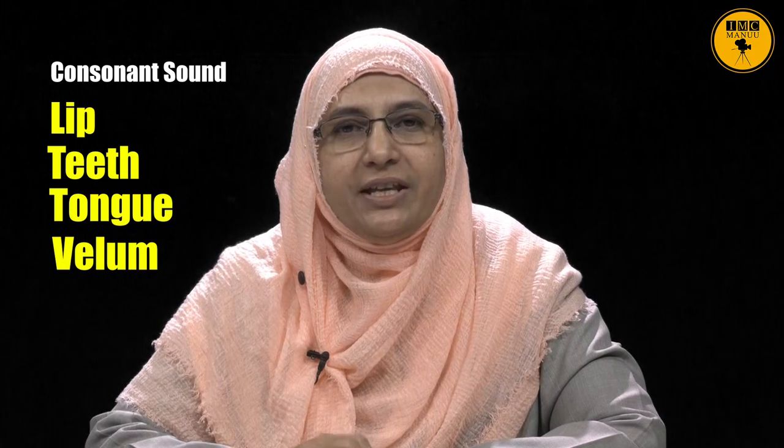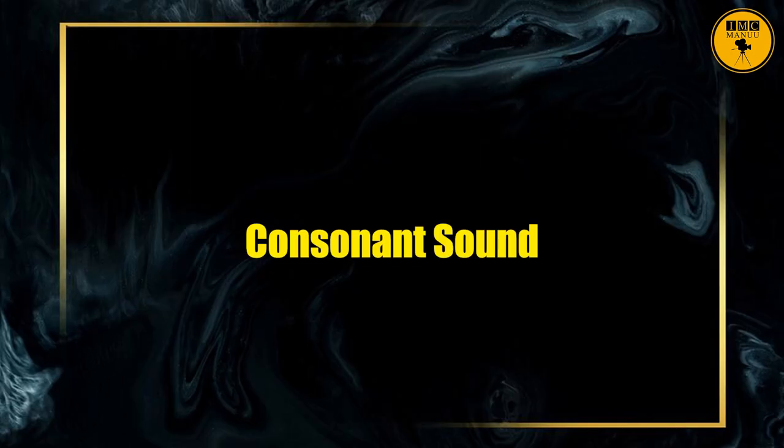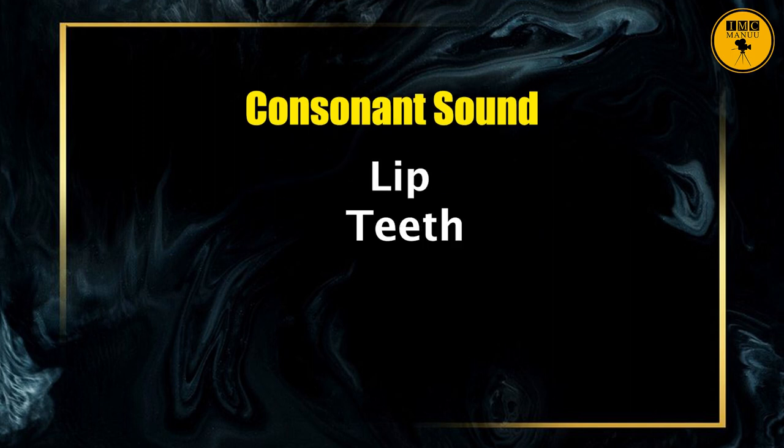I would like you to know the major distinction between a consonant sound and a vowel sound. In the case of a consonant sound, there is restriction of air when air is released — whether through the lips, teeth, tongue, or velum. In the case of a vowel sound, there is absolutely no restriction of air. This is the major distinction you need to remember. To create a consonant sound, we need a combination of lips, teeth, tongue, and velum.